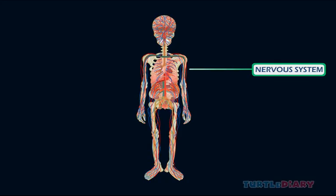Nervous system. Our nervous system carries electrical signals around our body. We need this system to see, hear, think and react.